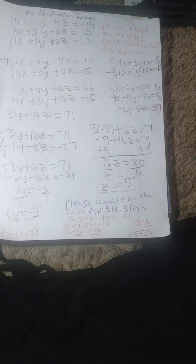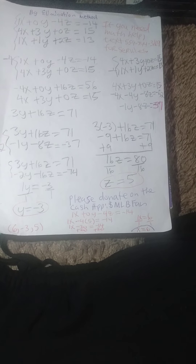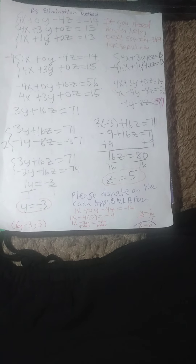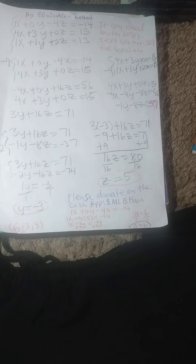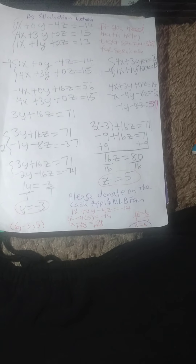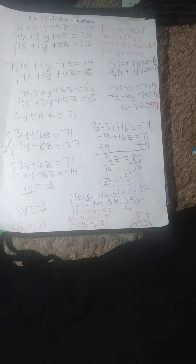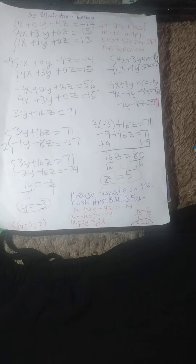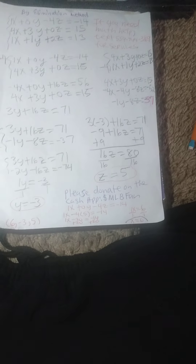Now we want to plug y equals negative 3 and z equals 5 into the first row of the linear system of equations that has 3 rows at the very beginning. So it is going to be 1x plus 0y minus 4z is equal to negative 14. We substitute the solutions in and obtain 1x minus 4 times 5 is equal to negative 14. So 1x minus 20 is equal to negative 14; we add 20 to both sides and obtain 1x is equal to 6. Divide both sides by 1, and x is equal to 6.